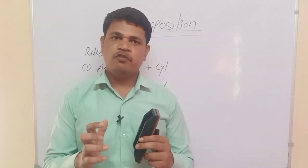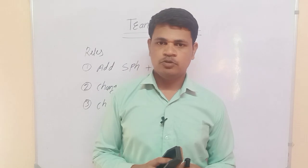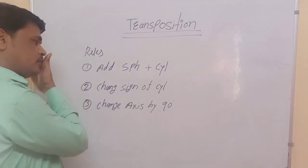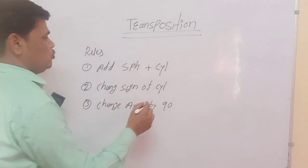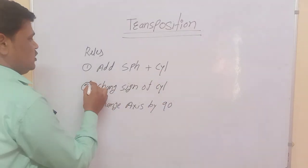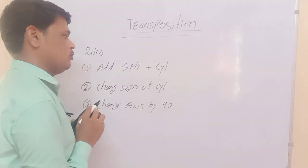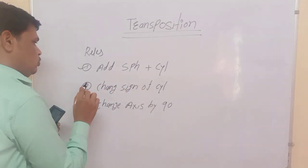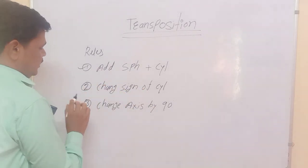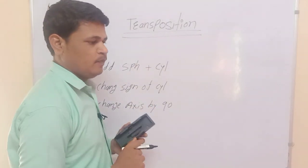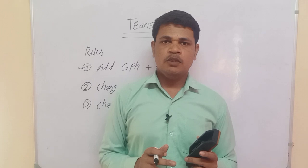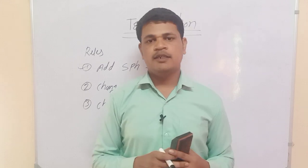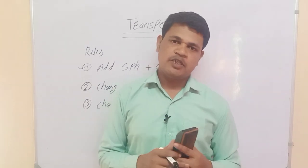Now we are seeing the rules of simple transposition — three rules, one by one. The first rule: to calculate the new spherical power, add spherical power plus cylindrical power. The second rule: change the sign of the cylindrical power. The third rule: change the axis by 90 degrees. If the axis degree is less than 90, add 90; if it is more than 90, subtract 90.